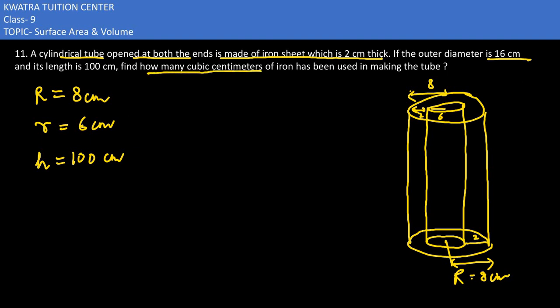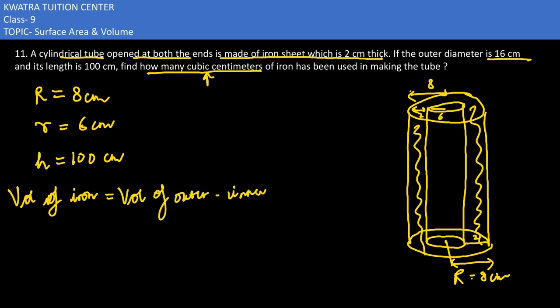To find the volume of iron used, we need to calculate the volume of the outer cylinder minus the volume of the inner cylinder. The volume of the outer one is π R² h, and the inner one is π r² h.